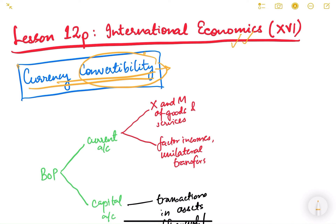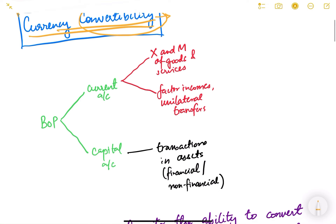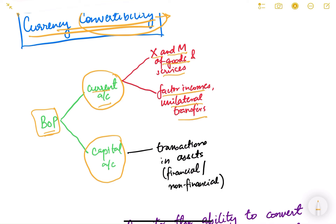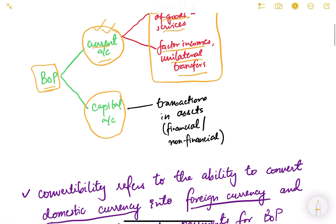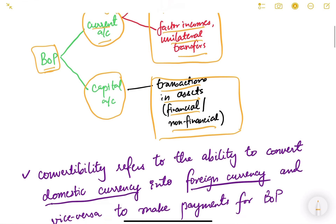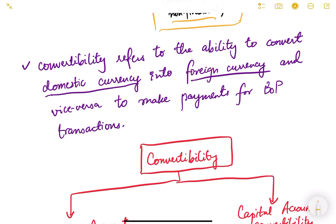In order to understand currency convertibility we have to go back to the basics and revise the balance of payment. Balance of payment consists of two accounts: current account and capital account. In the current account we see transactions in goods and services — exports and imports — factor incomes and unilateral transfers. In the capital account, transactions in financial or non-financial assets come under the capital account.